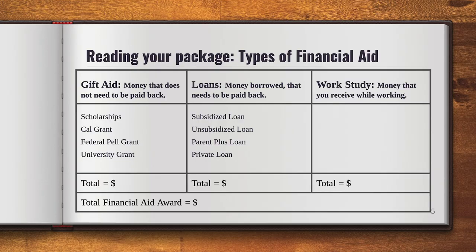Once you've figured out the cost of attendance, you're going to look at the different awards in your financial aid letter. There are three different types of financial aid. The first is gift aid, which is money that you don't have to pay back — things like scholarships and grants. Scholarships can come from various sources: private scholarships or, for those who play sports, sports-related scholarships. There are also grants; some popular ones are the Cal Grants, which are California state grants, and the federal Pell Grant. In some cases the university might give you a grant as well.